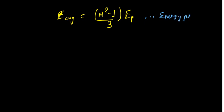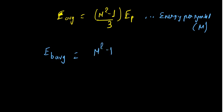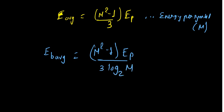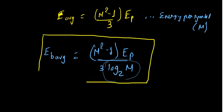Note that (M²−1)/3 · E_p is the energy per symbol. If we want energy per bit, E_b_avg, we divide the symbol energy by the total number of bits per symbol K = log₂(M). This gives us E_b_avg = E_symbol / log₂(M). This is an important equation we will use later to find the distance matrix between symbols — let's call it Equation 1.